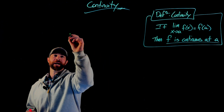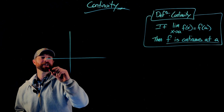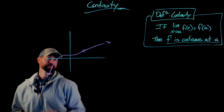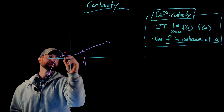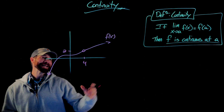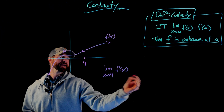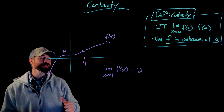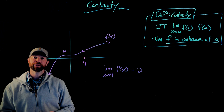Before we move forward, I just want to give you a quick graphical interpretation of what that means. Let's say we have some function f of x, and let's give it a hole right here. Let's say this is an x value of four and an output right where this hole is of two. The limit of this function as x approaches four would give us two, because from the left and the right, as we approach x values near four, we output values very close to two.